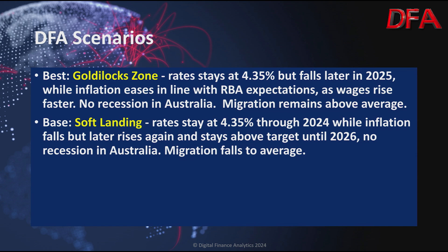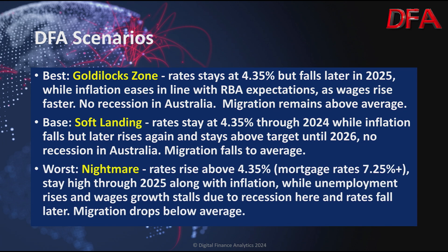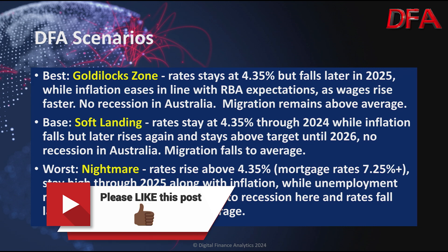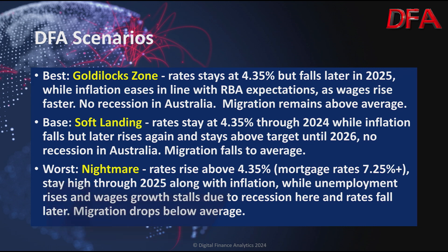The base case is a soft landing: rates stay at 4.35% through 2024, inflation falls and rises a bit later, staying above target until 2026, but we don't get a recession and migration begins to ease. There is also a worst-case nightmare scenario where rates rise above 4.35%, mortgage rates perhaps above 7% staying high through 2025, unemployment rises, wage growth stalls, we get a recession locally, and migration falls below average.